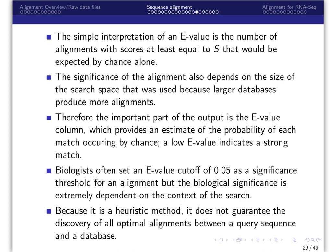Again, the simple interpretation of an E value is the number of alignments with scores at least equal to S that would be expected by chance alone. The significance of the alignment also depends on the size of the search space that was used because larger databases produce more alignments. Therefore, the important part of the output is the E value column, which provides an estimate of the probability of each match occurring by chance. A low E value indicates a strong match.